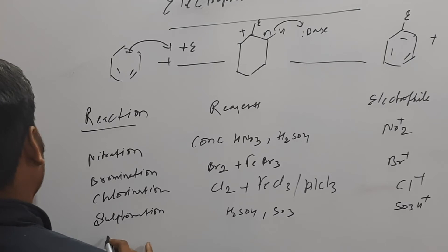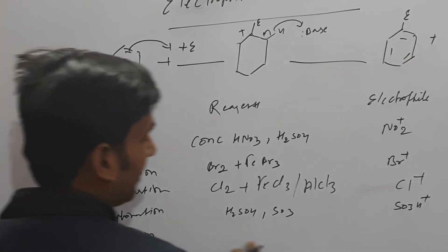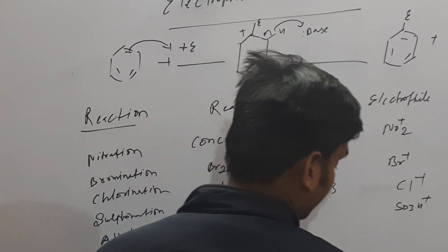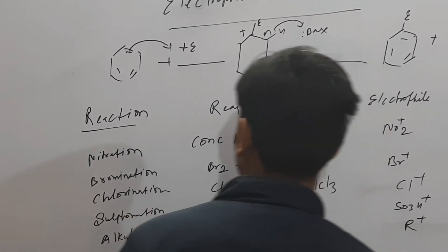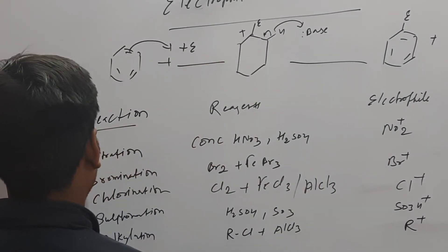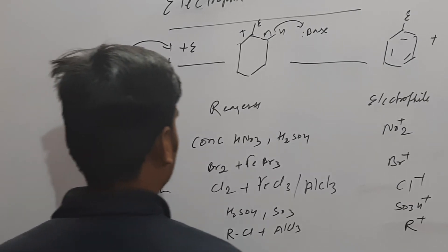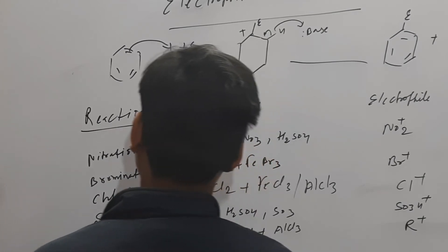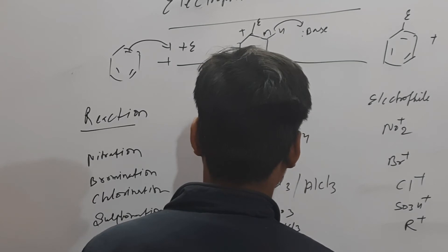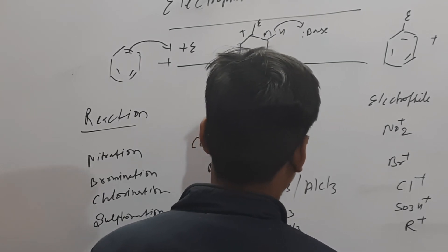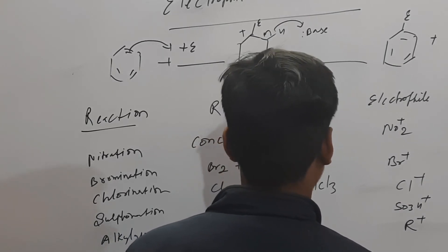Alkylation के लिए - यह Friedel-Crafts Alkylation के लिए यहाँ पे Electrophile R+। RCl + AlCl3, यह फिर जैसे CH3+ इत्यादि।